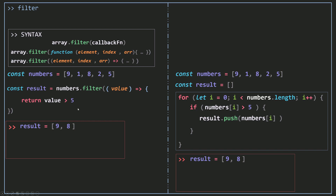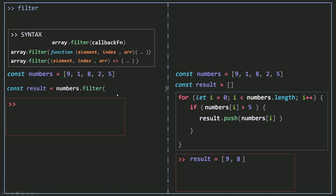If your arrow function only returns a value with no other code before the return statement, you can remove the curly braces and the return keyword. So the code becomes just: value => value > 5. With an arrow function and a single parameter, you can also remove the parentheses around the parameter. So now instead of seven lines of code, we achieve the same result with just two lines of code.